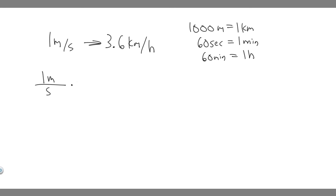Now we're going to target each unit, starting with seconds. To convert from seconds to minutes, we use the fact that there are 60 seconds for every one minute. This cancels out the seconds, and now we have it in meters per minute.